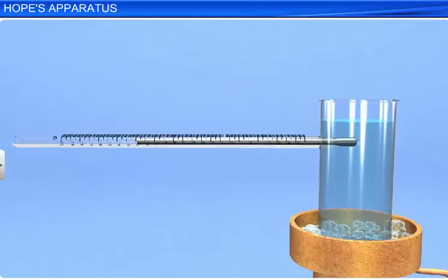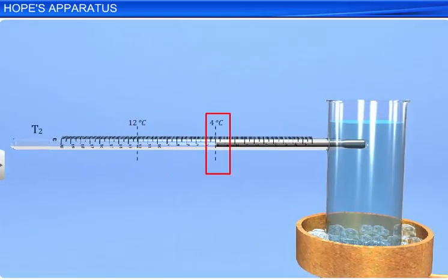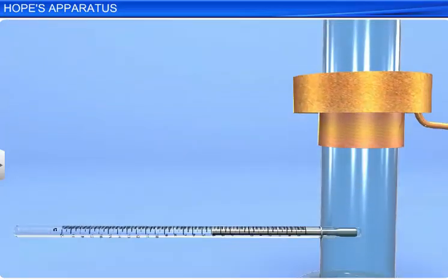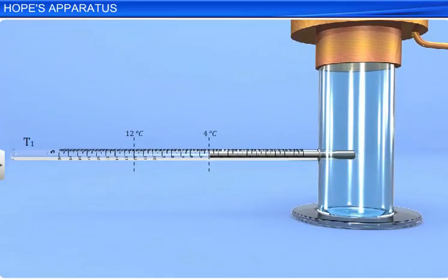Thus, thermometer T2 shows a rapid fall in temperature. However, the temperature of water in the lower portion of the cylinder remains at 4 degrees Celsius.